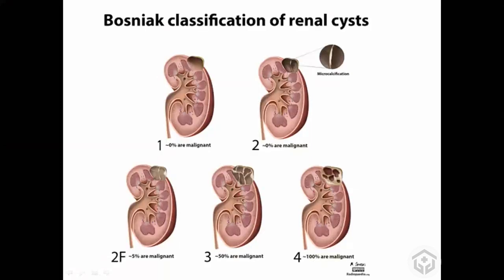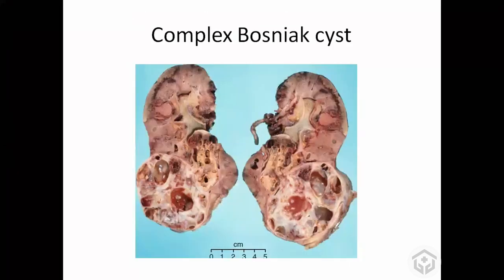However, we have a type called complex cyst. There is a cyst in the kidney that contains a solid area as well as a liquid fluid-containing area. If you get a cyst with both solid and liquid areas, you cannot ignore it. These kinds of cysts are known as complex cysts, or complex Bosniak cysts, and they are almost 100% malignant, so you have to remove the kidney.